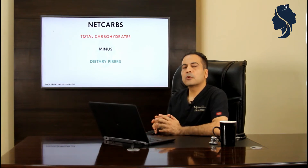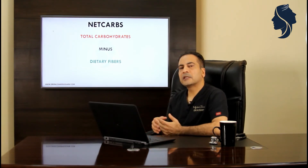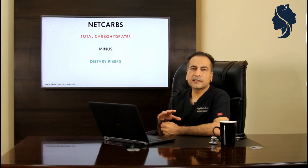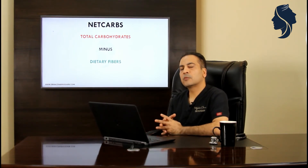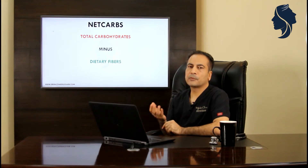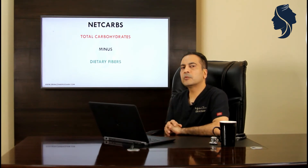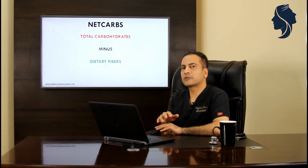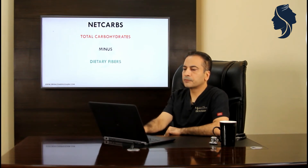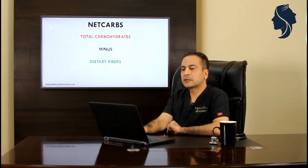Now we have something called net carbs. Net carbs is basically total carbohydrates minus dietary fibers. Only a small proportion of fibers are absorbed by the body and contribute to our energy needs; most of it passes through the system and we excrete it. The main point here is: carbohydrates minus dietary fibers is what we call net carbs.